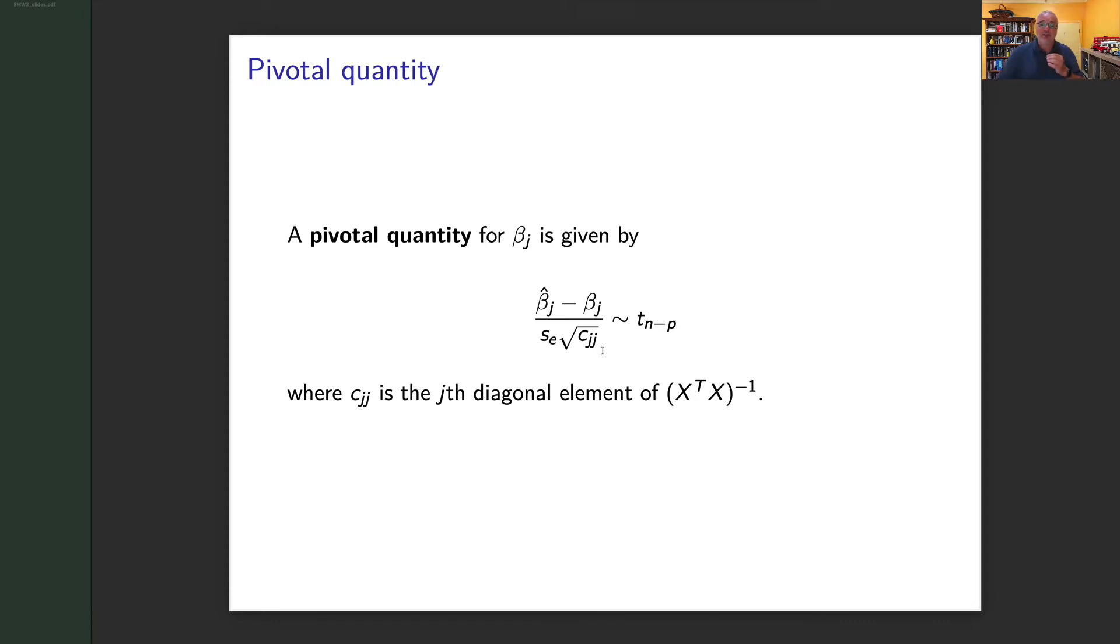Which is SE times the square root of c_jj, where c_jj is the jth diagonal element of (X'X)⁻¹. If you think about it, because σ²(X'X)⁻¹ is our variance-covariance of our β̂s, then the variance term will be the jth element. So if I take the square root of that I get the standard error once I multiply it by my guess of σ, which is SE.